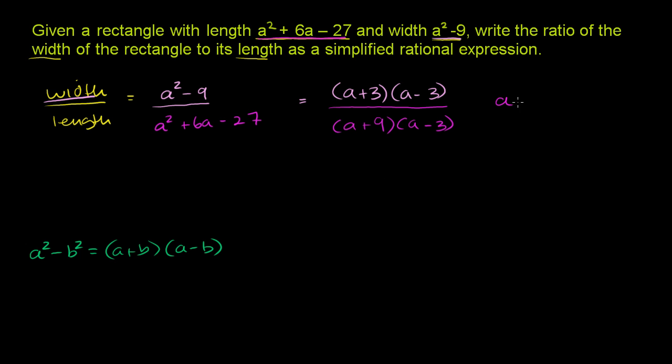So a cannot be equal to negative 9 or 3. Because if a was negative 9 or 3, then the denominator would be 0 and this expression would be undefined. We have to remember this. This is part of the expression. We don't want to change this domain or allow things that weren't allowable to begin with.